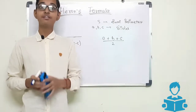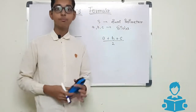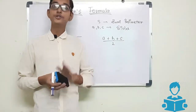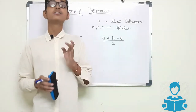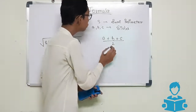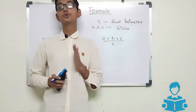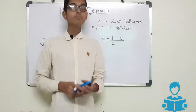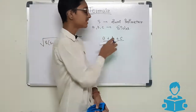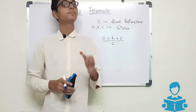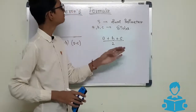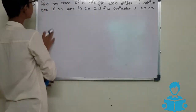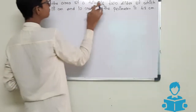To find the semi-perimeter we use the formula: a plus b plus c divided by two. If you have been given the value of the perimeter, you simply divide the given perimeter by two to find the semi-perimeter. But if you don't have the perimeter and you have been given a, b, and c, you add a, b, and c and divide the sum by two to get the semi-perimeter.